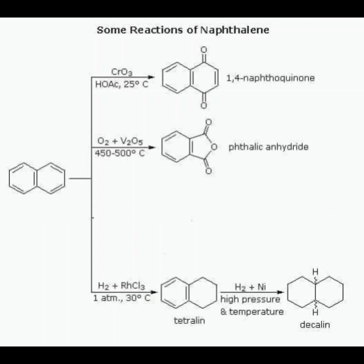Oxidation and reduction reactions of naphthalene: naphthalene on oxidation with chromium trioxide at 25 degrees Celsius gives 1,4-naphthoquinone, whereas oxidation with vanadium pentoxide at 450 to 500 degrees Celsius gives phthalic anhydride.